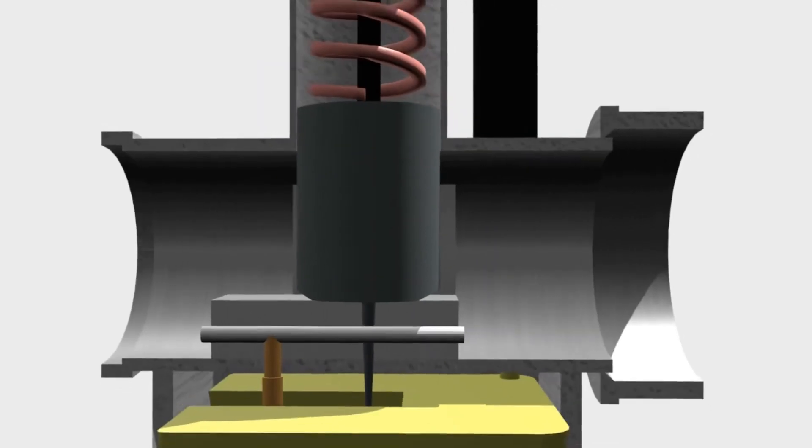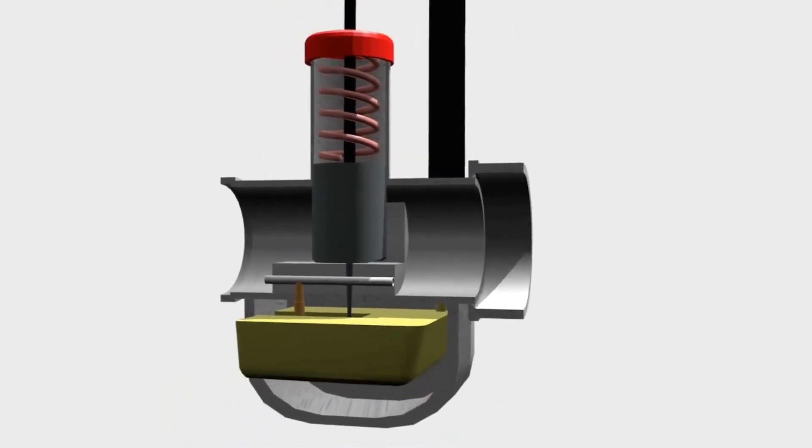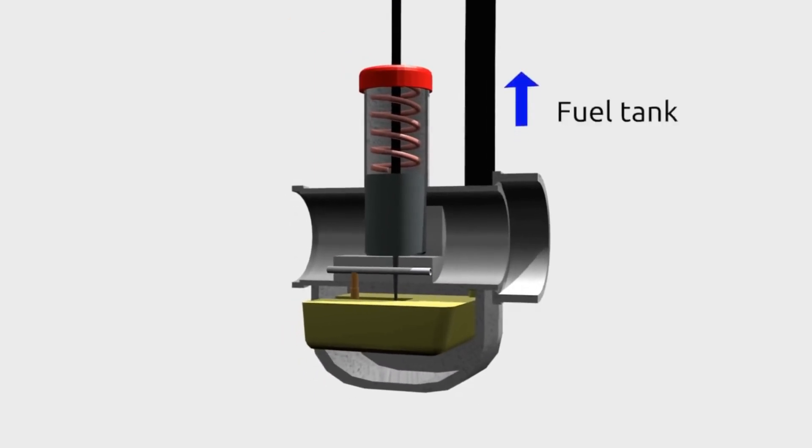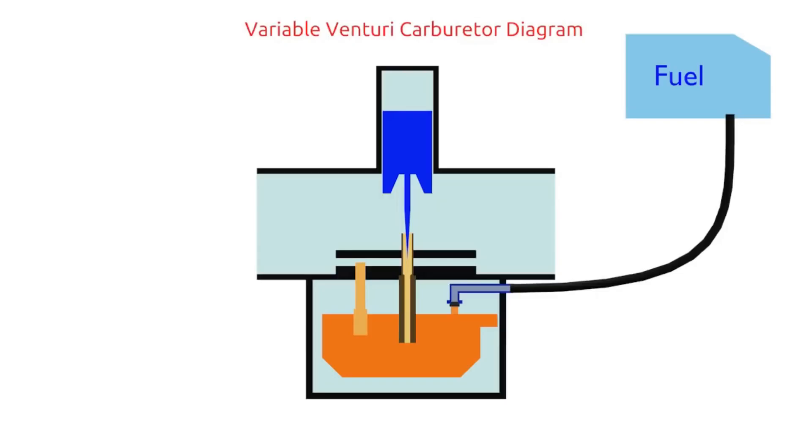Then, we know that the fuel tank is higher than the carburetor. Why fuel doesn't overflow? Apparently, there is a float system that makes the fuel doesn't overflow. This system only utilizes float movement to close the fuel from the tank.